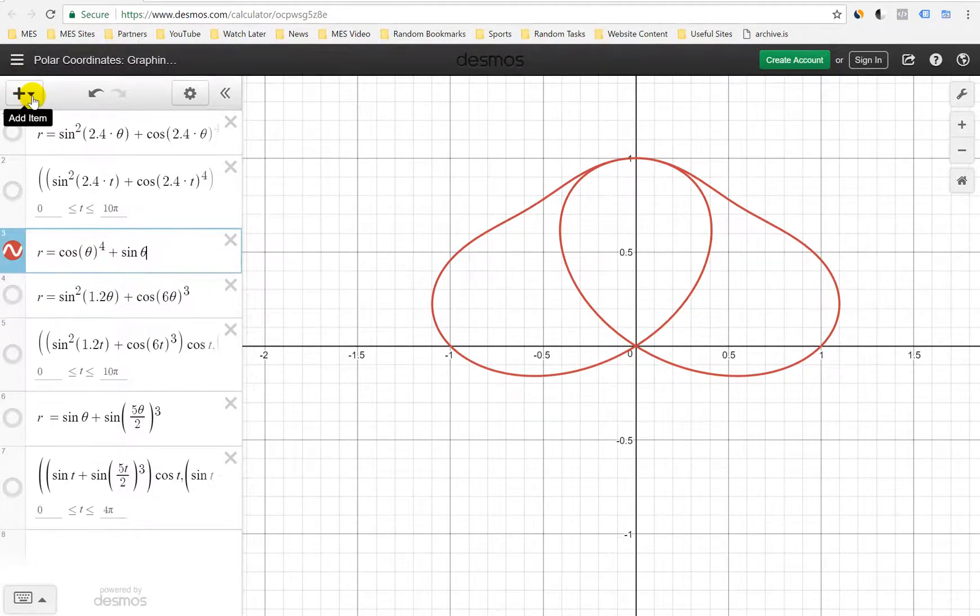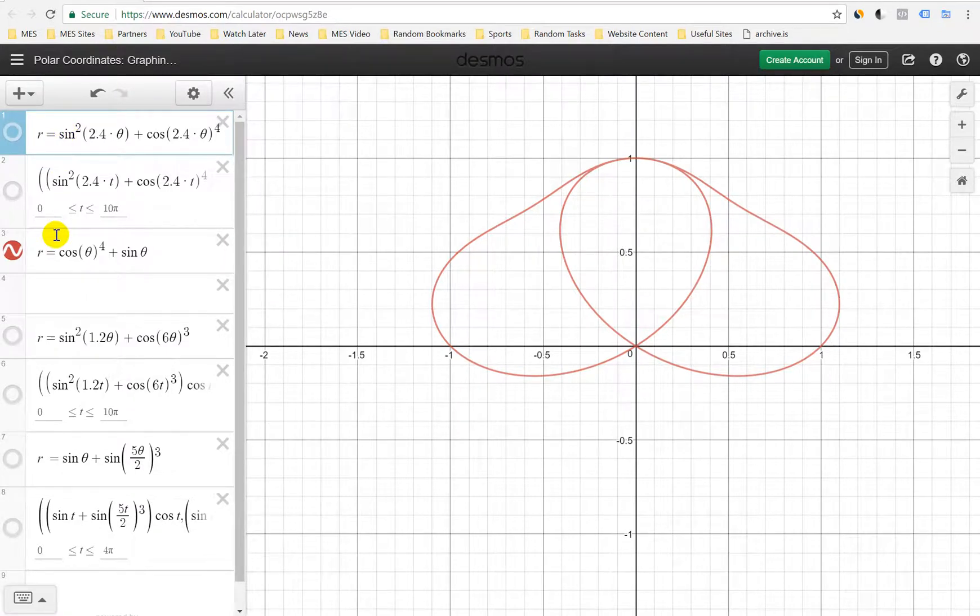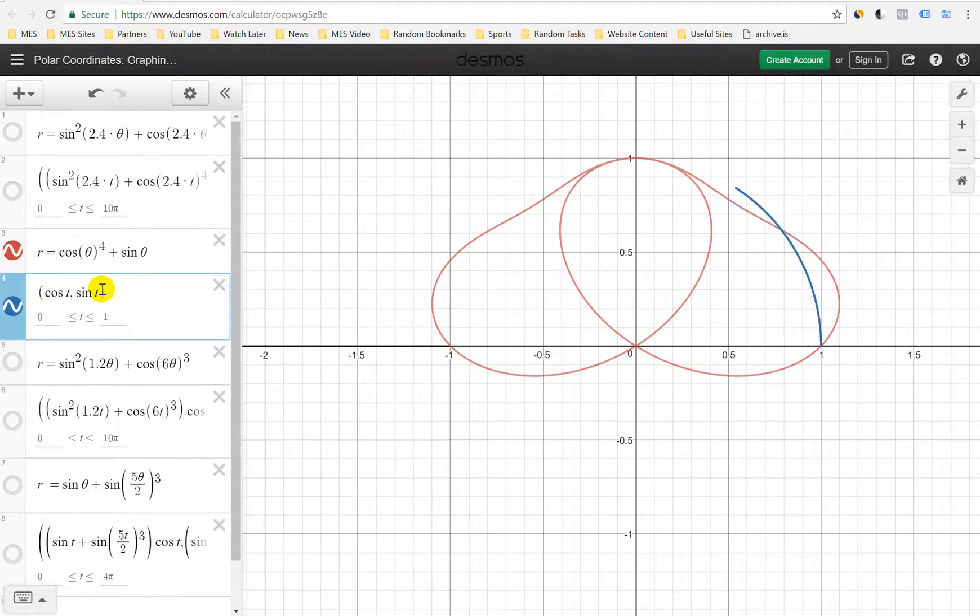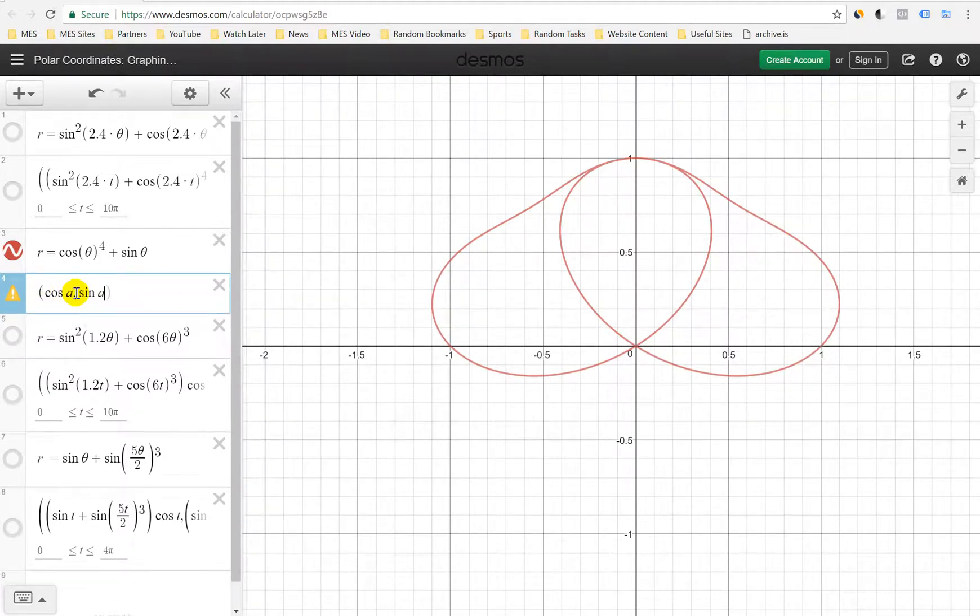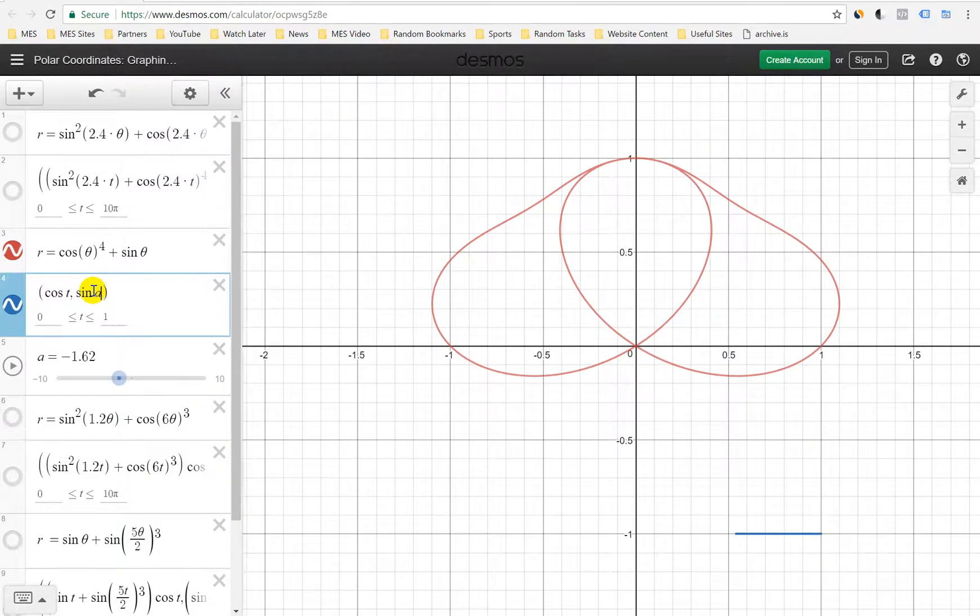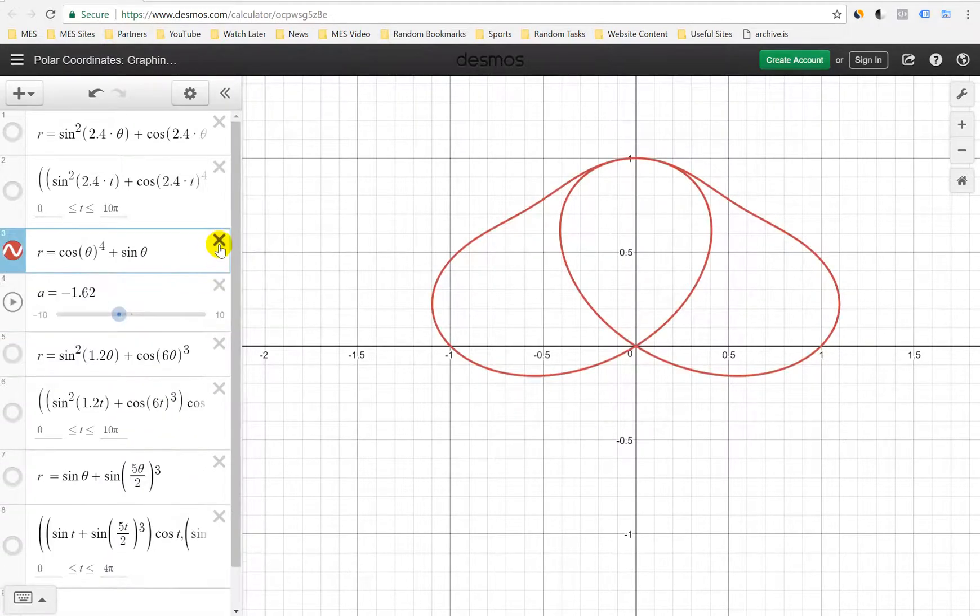You could also write this in parametric form. If you write cosine theta and sine theta, that doesn't work there. If you put T and T, we get this one here. But if you put A and A, you need to add a slider. As you can see here, you can move this around, which is pretty cool. You could press the play button. You could do some amazing stuff here. You can also change the speed. I highly recommend playing around with this. We need to use the T there. You could graph the same way. Play around with those.